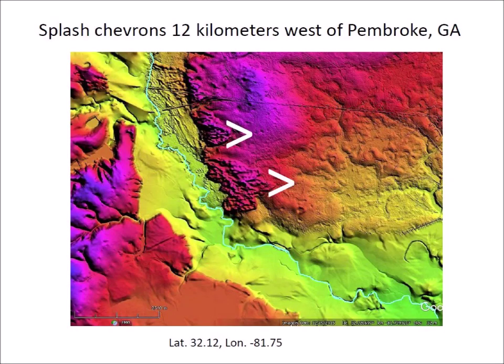These splash chevrons are on the east bank of the Canoochee River near Pembroke, Georgia. The debris from an impact usually produces a symmetrical splash that should create splash chevrons on both sides of the river, but the material ejected by a splash during a strong windstorm would be blown in the direction of the wind. In this case, a westerly wind could have created these chevrons that point toward the east.